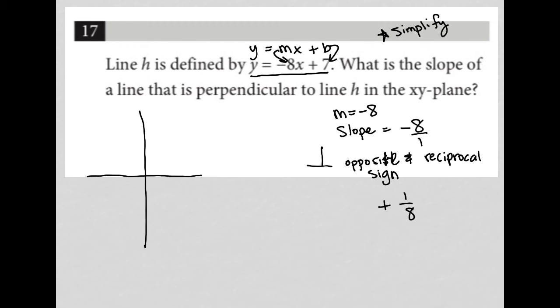So perpendicular lines have opposite sign and reciprocal slopes. Our slope started off at negative 8, and now it's going to turn into positive for the opposite sign, and 1/8 for the reciprocal part. So your answer would be 1/8.